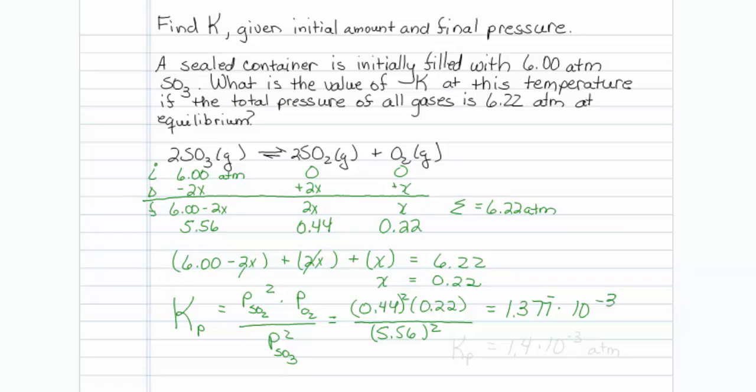And in this case it looks like I have two sig figs when I get my difference. So this particular one would be 1.4 times 10 to the minus 3, and just to be very specific about it, it would be in units of atmospheres. That's how you do that one.